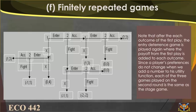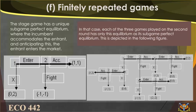Note that after each outcome of the first play, the entry deterrence game is played again where the payoff from the first play is added to each outcome. Since a player's preferences do not change when we add a constant to its utility function, each of the three games played in the second round is the same as the stage game. The stage game has a unique subgame perfect equilibrium where the incumbent accommodates the entrant and, anticipating this, the entrant enters the market. Each of the three games played on the second round has only this equilibrium as a subgame perfect equilibrium.